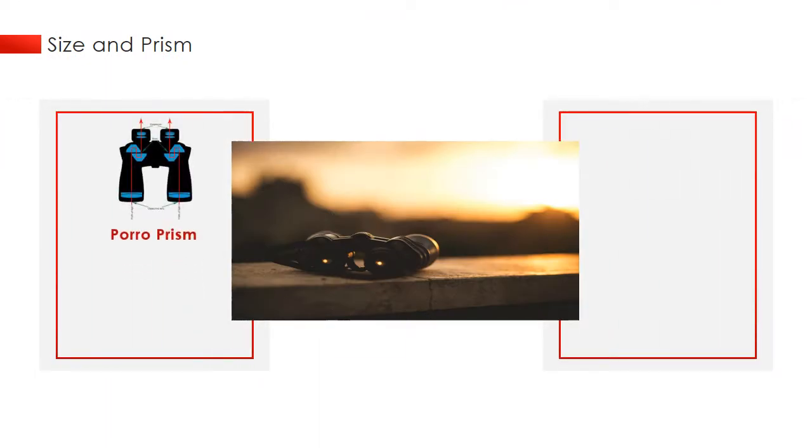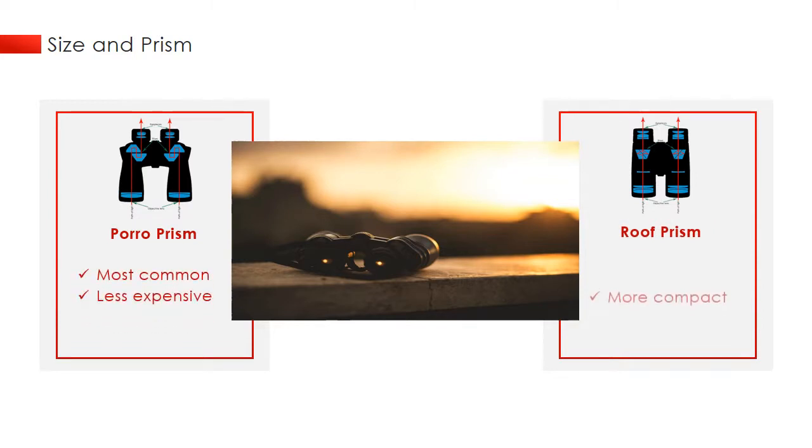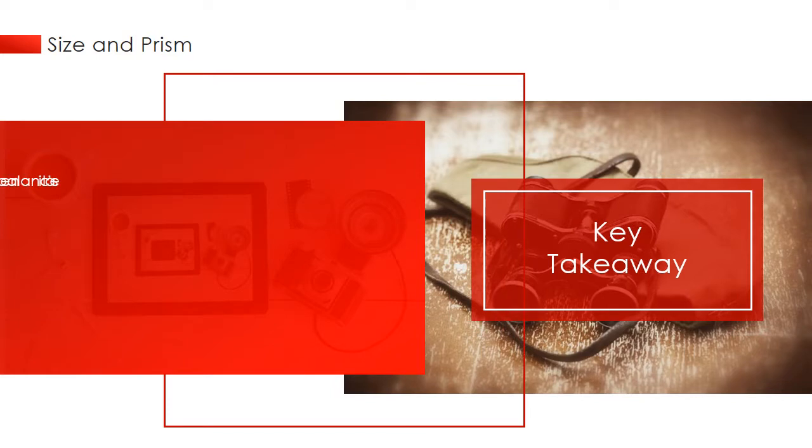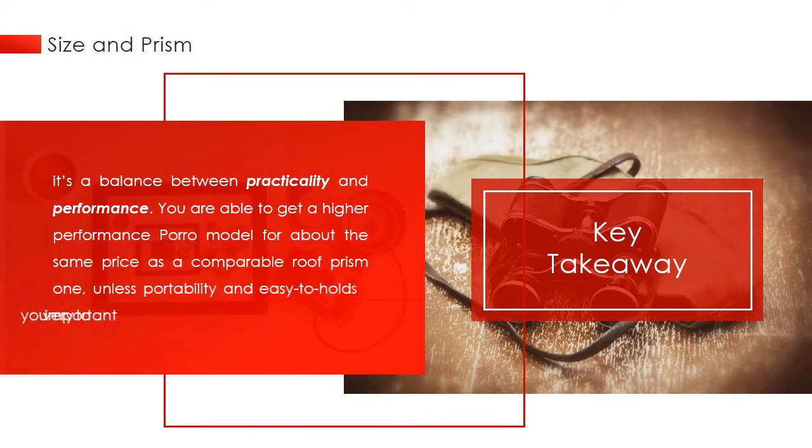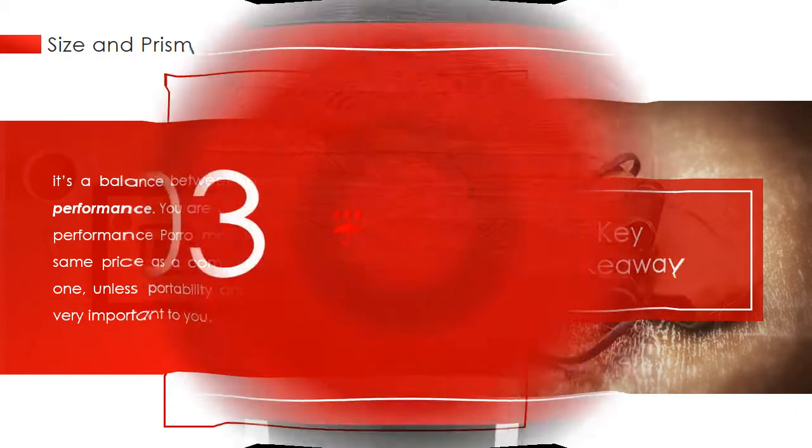Generally speaking, binoculars using poro prisms are larger and fatter, while roof prism binoculars are more streamlined, compact, and easy to hold. However, roof prism binoculars tend to be more expensive due to their complexity. So ultimately, it's a balance between practicality and performance. You are able to get a higher performance poro model for about the same price as a comparable roof prism one, unless portability and ease of holding is very important to you.